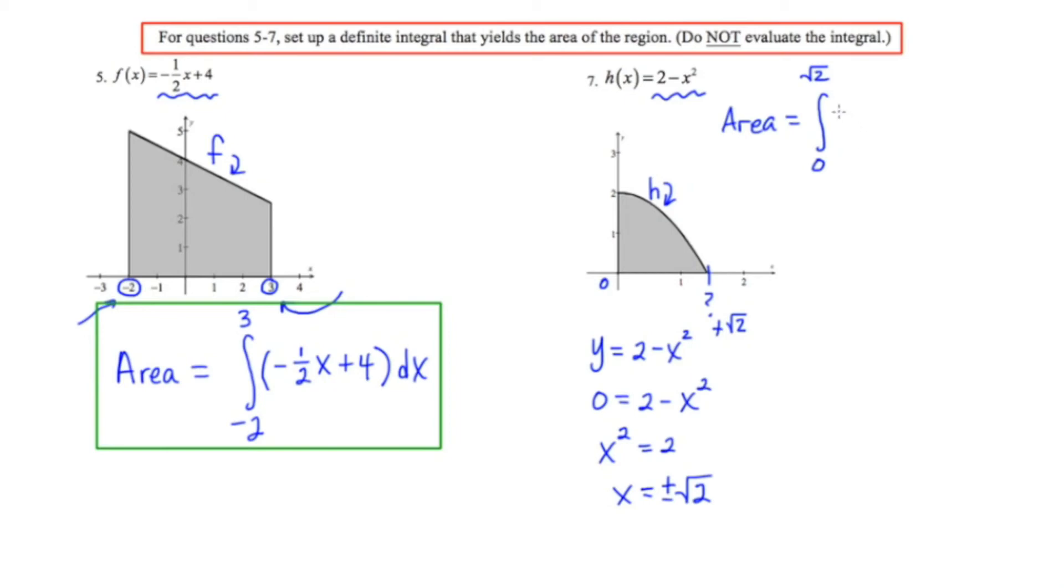Now because h is a multi-termed expression I'm going to use parentheses and I'm going to follow up with a dx. So this definite integral represents the area under the curve starting at zero and ending at root 2. So once again it's another way of connecting this idea that a definite integral means the area under a curve on a very specific interval. Let's go to slide three.